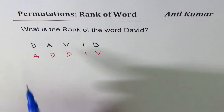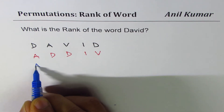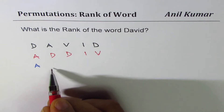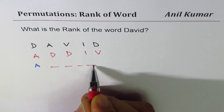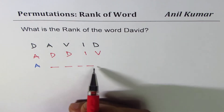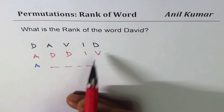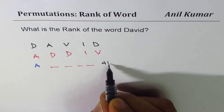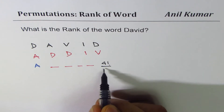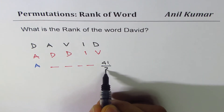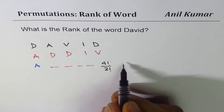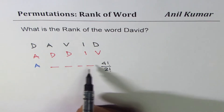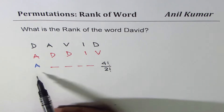If I begin counting words starting with A, I have four positions to fill. These four positions can be filled with D, D, I, V — so I have 4 factorial ways. Since we have two D's, we divide by 2 factorial. We'll do this calculation at the end to find the rank. All words starting with A will come before DAVID — they rank with a lower number.